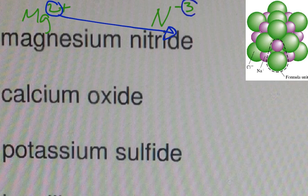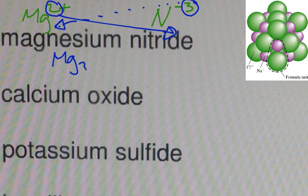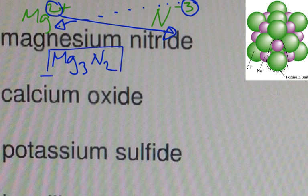So the 2 from the magnesium goes to the subscript over here. And the 3 will go over here to the subscript of the Mg. And what we wind up with is Mg3N2. So that's magnesium nitride formula. You're done. You move on.